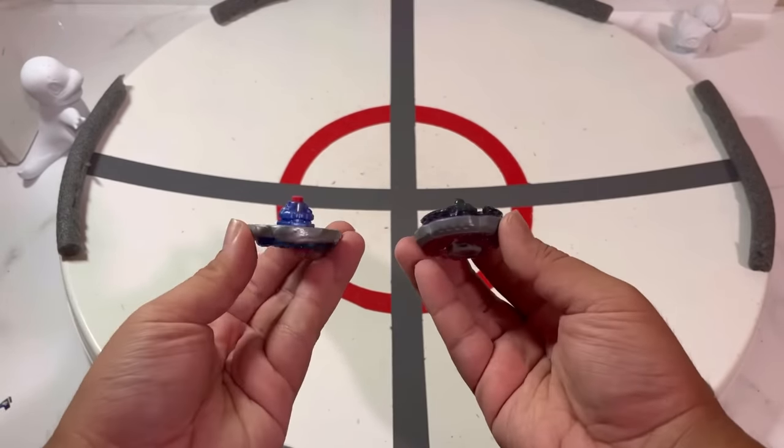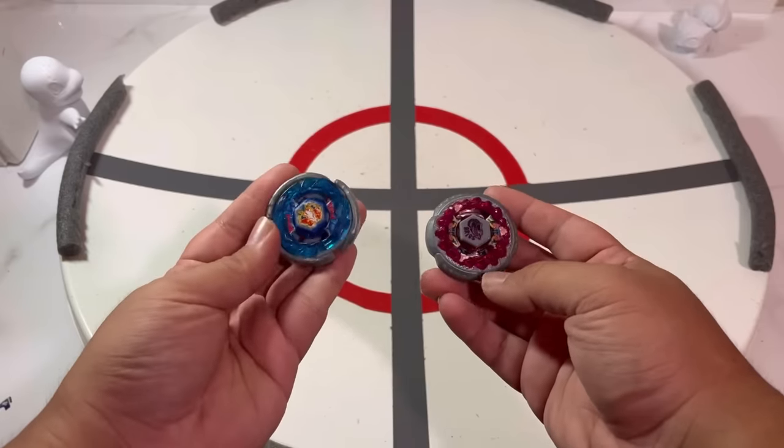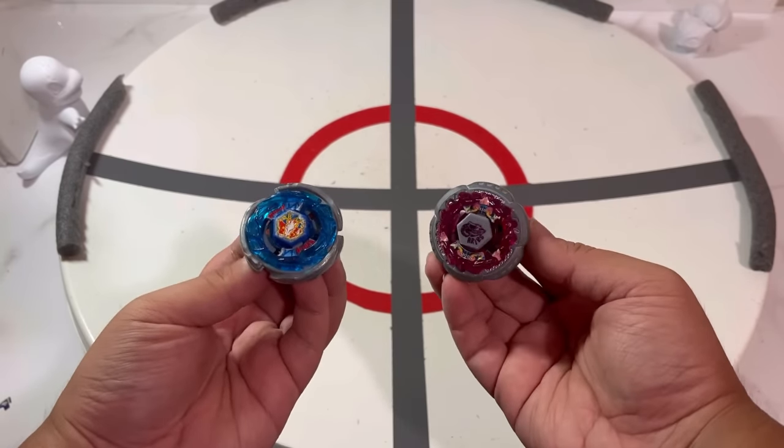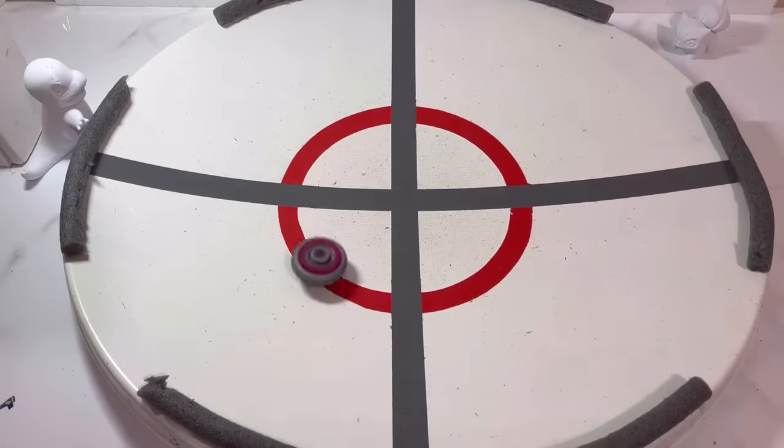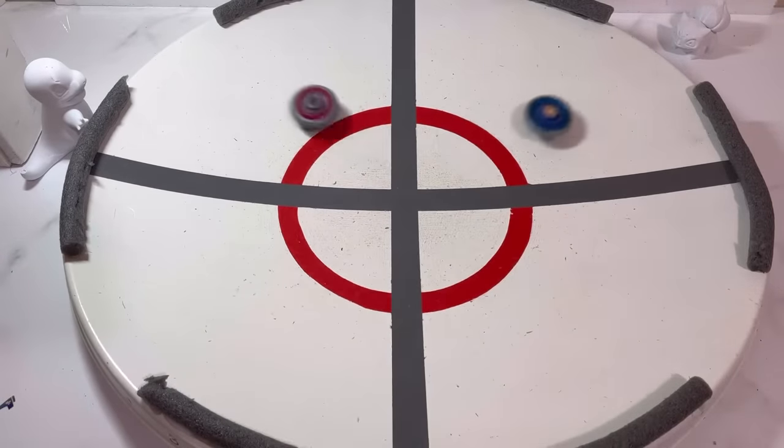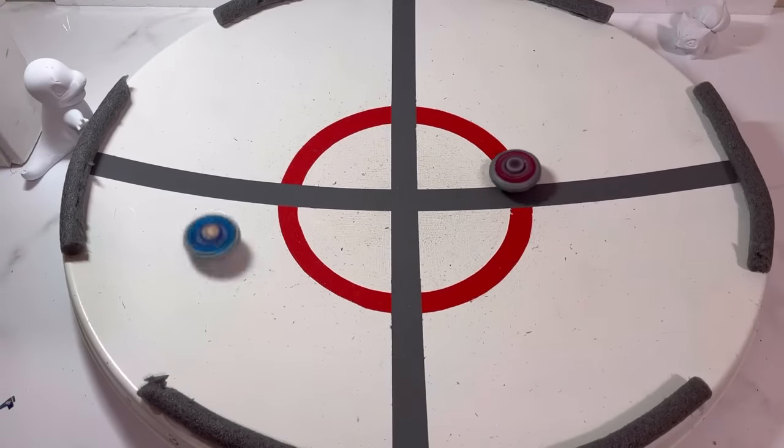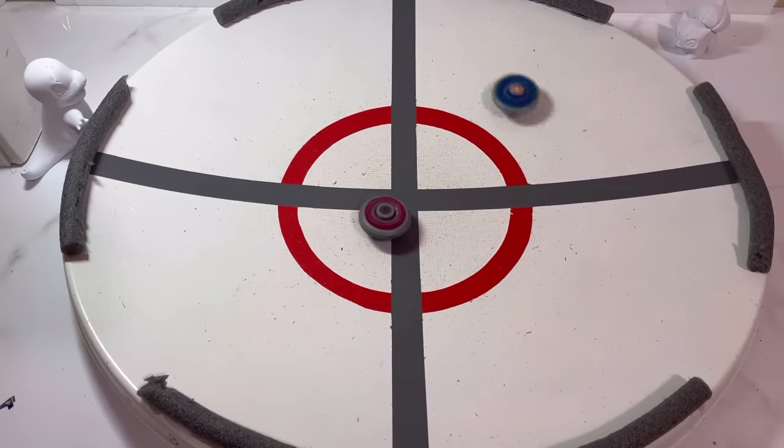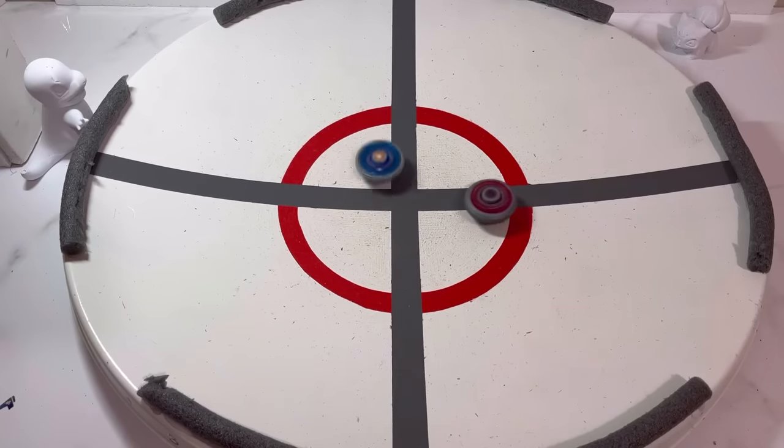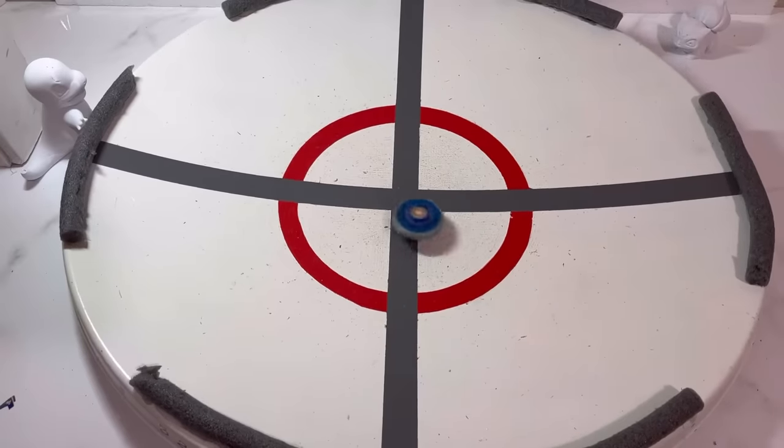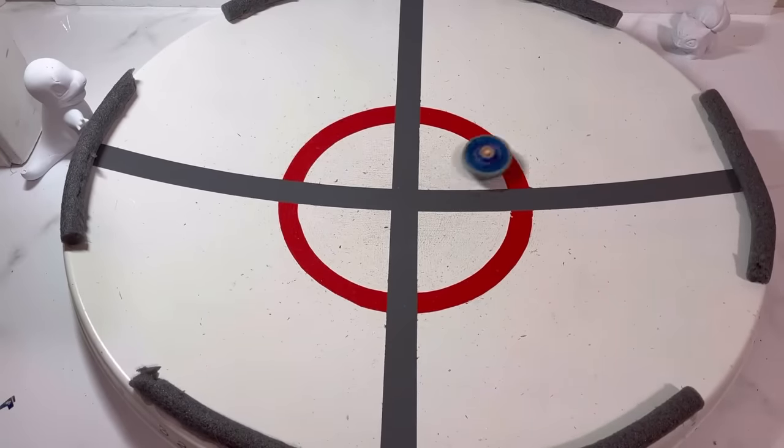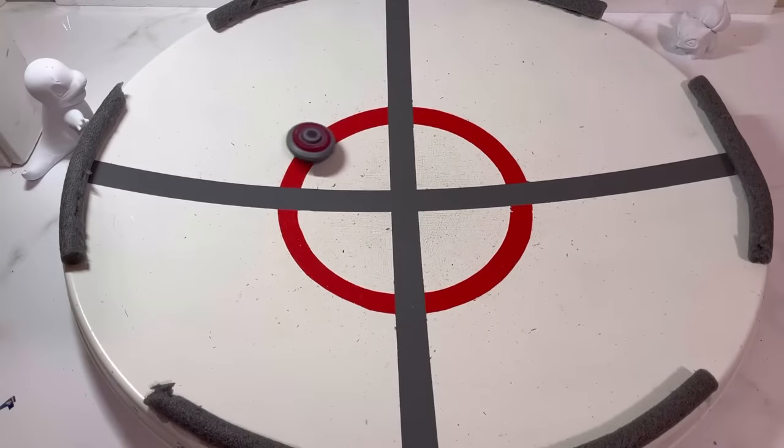We have Storm Pegasus, the attack type Beyblade, versus Rock Ares, a defense type Beyblade. We're going to be doing a best of 5, so first to 3 points will take it all. Storm Pegasus gets a huge hit onto Rock Ares and knocks it out of the stadium. The score is now 1-0.